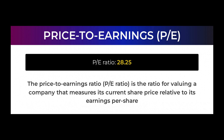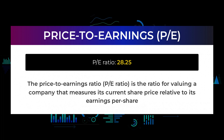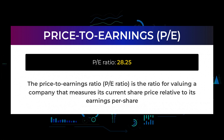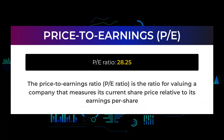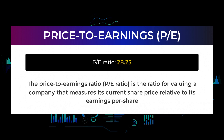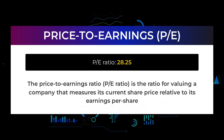Let us look at some fundamental data before we discuss possible trading levels for Ford Motor. The price-to-earnings ratio (P/E ratio) is used for valuing a company by measuring its current share price relative to its per-share earnings. Ford Motor currently has a P/E ratio of 28.25, which is a relatively normal price-to-earnings ratio, often seen in businesses with a long track record or predictable revenues.